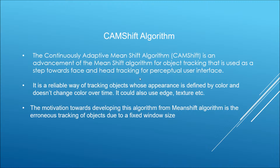Why do we use the CamShift algorithm instead of the Mean Shift algorithm? The Mean Shift algorithm had a dependency: it had a fixed window size, so the region of interest could either fit into the window, be too large, or too small. For example, if tracking a ball, the window might be too small to capture the entire ball, or too large, encompassing background as well. The CamShift algorithm is a modification to that fixed window size.